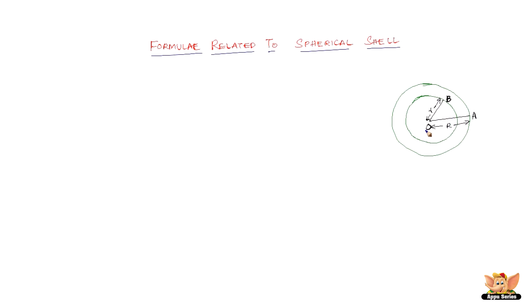The first one is the outer surface area. The outer surface area is going to be 4π capital R squared because we're dealing with a bigger circle whose radius is capital R.